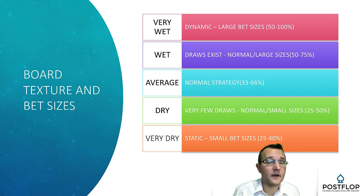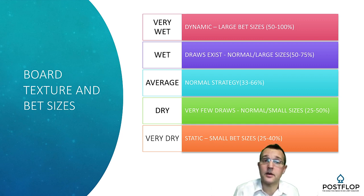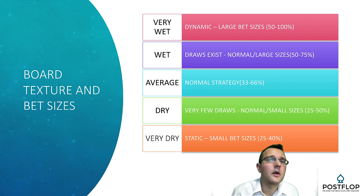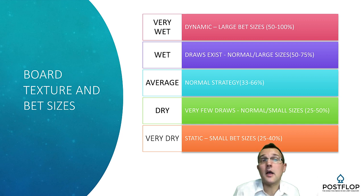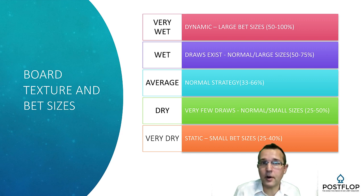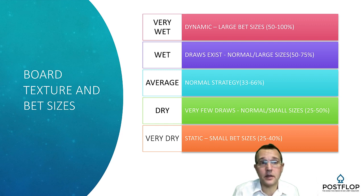This is a very simplified but useful table of guidelines — they're not rules, they're guidelines. You can see that the wetter and more dynamic the board is, the larger the recommended bet sizes are. When the board is dry and static, smaller bet sizes are appropriate. By following these guidelines you will often present a larger problem to your opponent with the majority of his hand range.